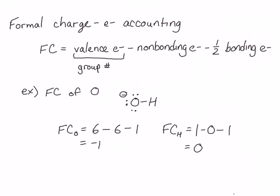You can check your work because the hydroxide ion has an overall charge of negative 1. The formal charges on all atoms within the ion should sum to give the overall charge. In this case, we have a negative 1 charge on oxygen, which sums to give us a negative 1 on the entire ion — so we can verify our work in that way.